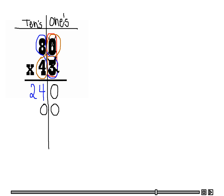Now I am going to multiply the tens place. In this case I am going to multiply 4 times 0, so 4 times 0 is 0 — I will write that in the tens place. The next thing I need to do is multiply 4 times 8 in the tens place, so 4 times 8 is 32. It is very important that you know your multiplication facts — that will help you out a lot.